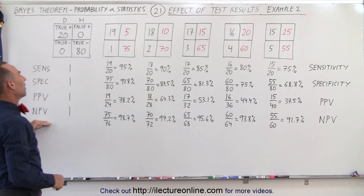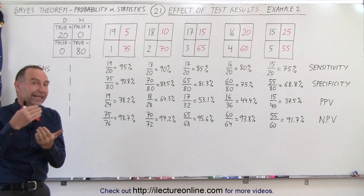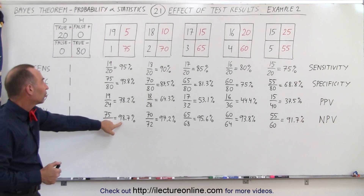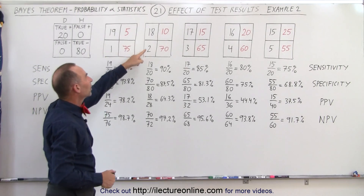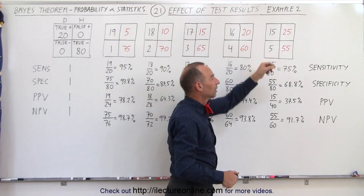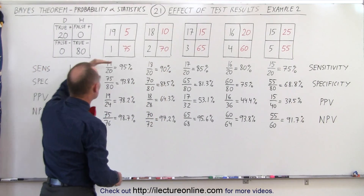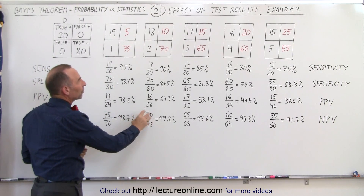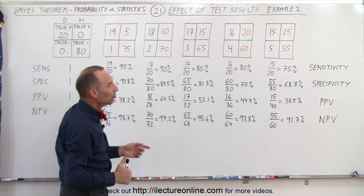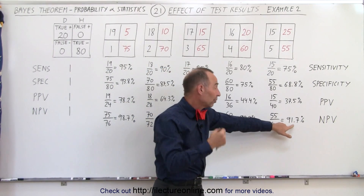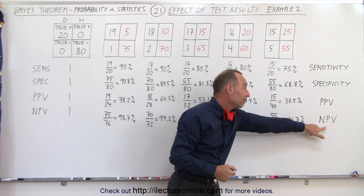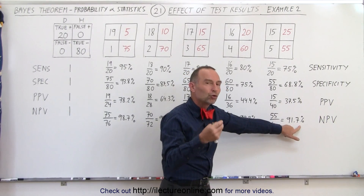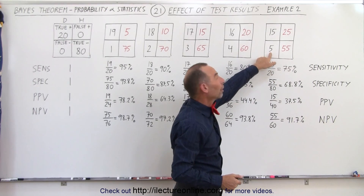Finally, the negative predictive value — the probability that you're truly negative if you test negative. That number is hopefully close to 1. Initially it is close to 1 because there are very few false negatives. But as the number of false negatives grows, because the sensitivity of the test drops, the ratio of people that do test negative divided by the total number of negatives becomes smaller. In the end, the NPV tells us that if you test negative, there's a 91.7% chance that you are truly negative, and that decreases due to the higher and higher number of false negatives.